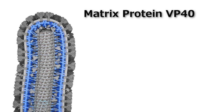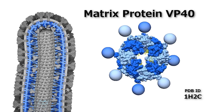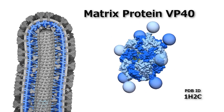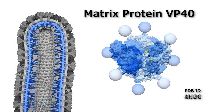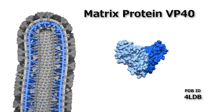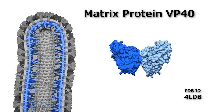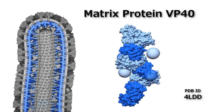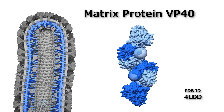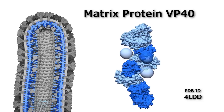Matrix protein VP40 plays at least three different roles in different configurations. As a cyclic octamer, it binds to RNA and is involved in viral replication. As a dimer, it transports the elements of the nucleocapsid to the host cell membrane where, upon arrival, it is reconfigured into a hexamer that forms the filamentous matrix necessary for assembling and budding new copies of the virus.